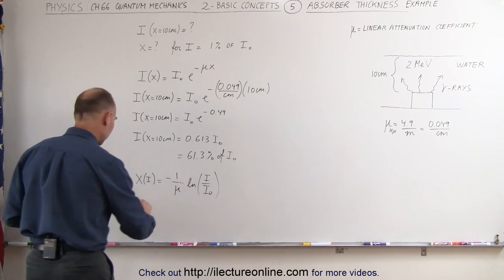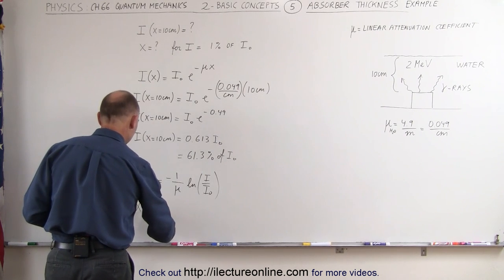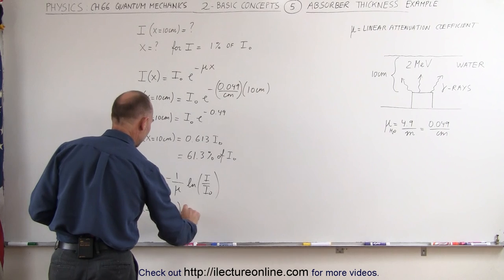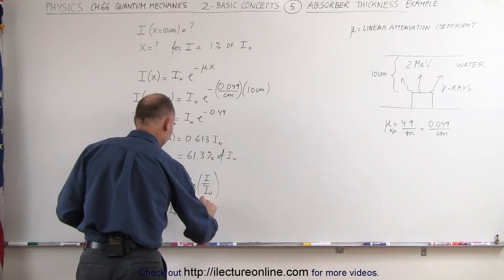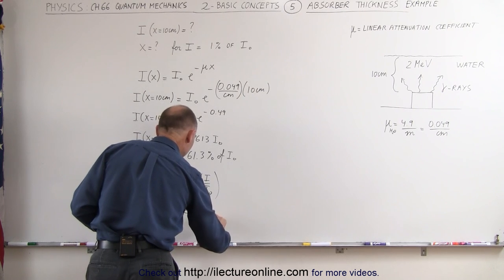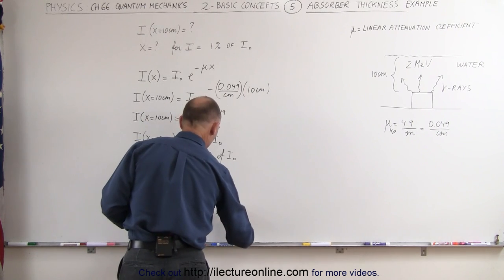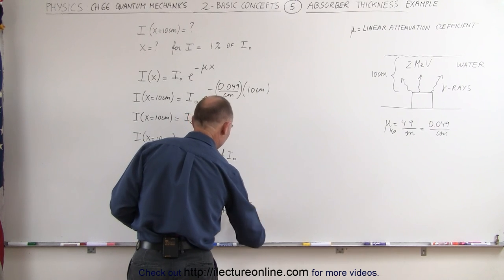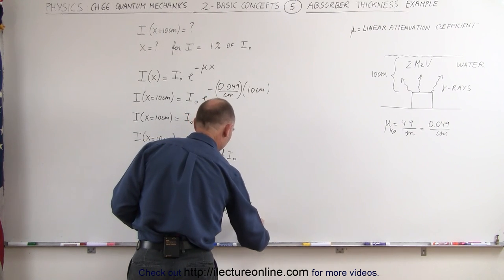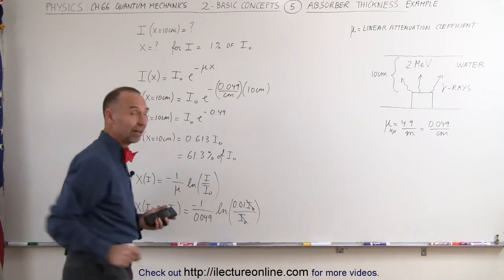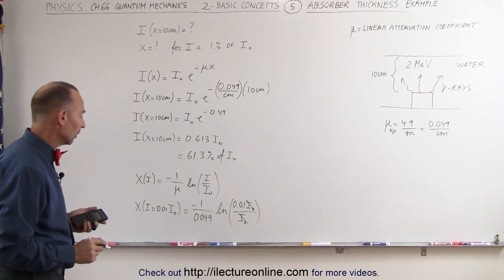In this case we're looking for x when I is equal to 0.01 times the original intensity which is equal to negative 1 over mu for water is 0.049 times the natural log of 0.01 I sub not divided by I sub not. Notice that the I sub not cancel out and we just have to take the natural log of 0.01.